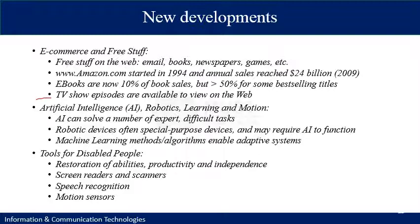You must be aware that there are many TV shows and episodes available online for free access. Current developments and future prospects have implications in artificial intelligence, robotics, learning and motion. Artificial intelligence can solve a number of expert and difficult tasks where human involvement is quite difficult. Robotic devices can be used for special purposes and may require artificial intelligence to function properly. Machine learning methods and algorithms enable adaptive systems in current societies.